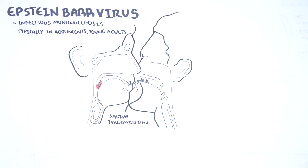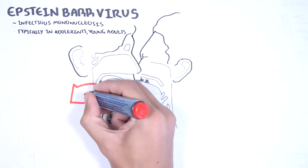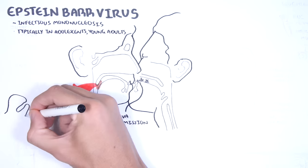Nearly everyone will be infected with Epstein-Barr virus at some point. The good thing is that for most of us it is asymptomatic — you have no symptoms. In this video, we will talk about the primary Epstein-Barr virus infection, which is asymptomatic, and how the infection can evolve to become infectious mononucleosis, which is a symptomatic Epstein-Barr virus infection.